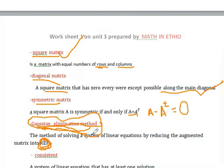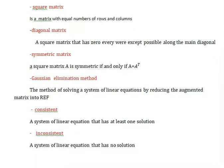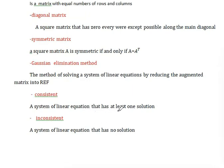Consistent system: A system of linear equations that has at least one solution is called consistent. A system that has no solution is called inconsistent.